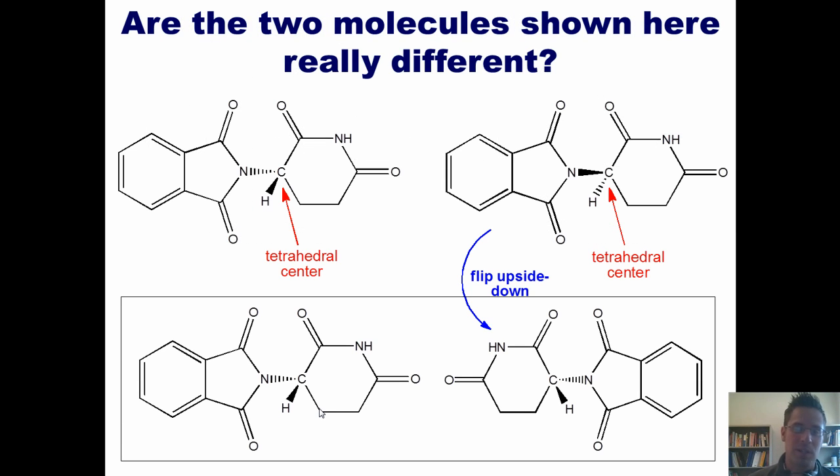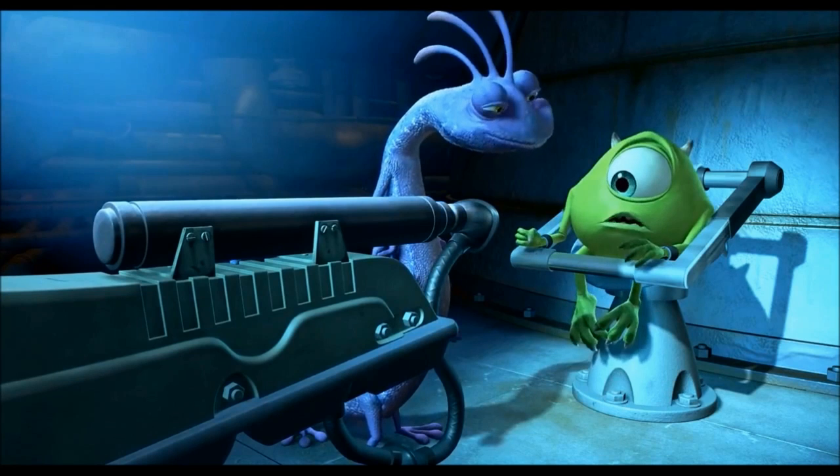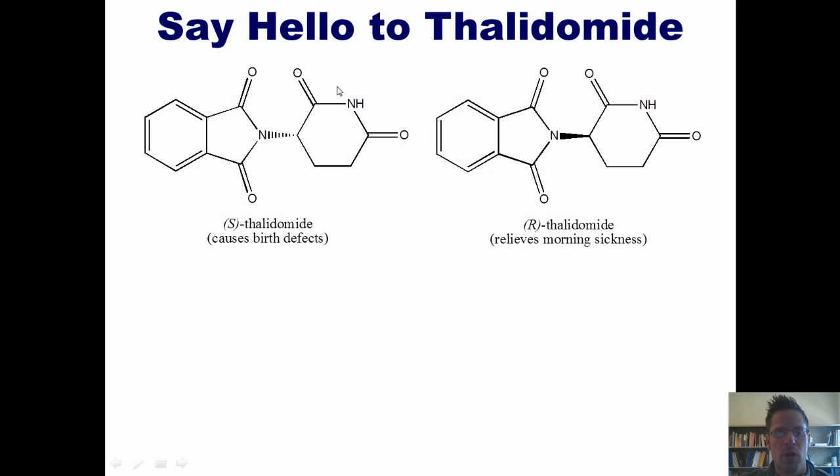Say hello to thalidomide. Hello. Now, the enantiomer shown at the left is called S-thalidomide, and the enantiomer shown to the right is called R-thalidomide. You'll notice that S-thalidomide causes birth defects, while R-thalidomide relieves morning sickness in pregnant women. Do you see any problems with those properties? Yeah. Yeah, I do too.